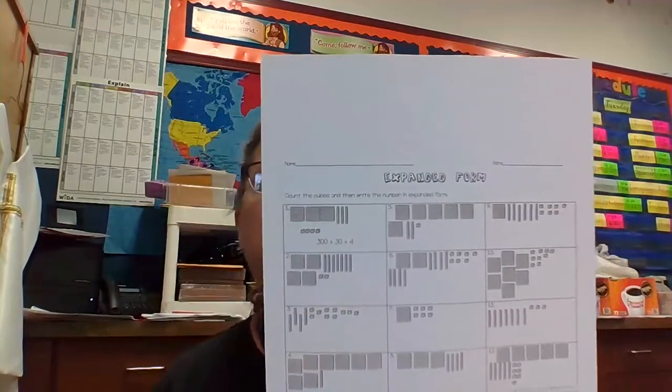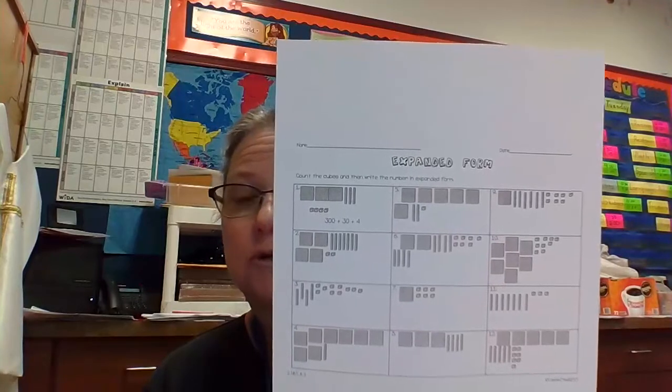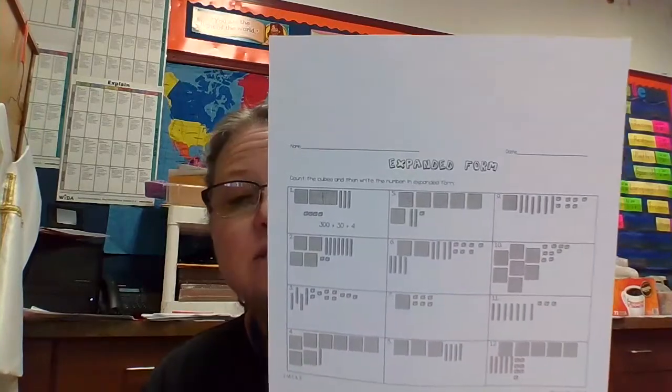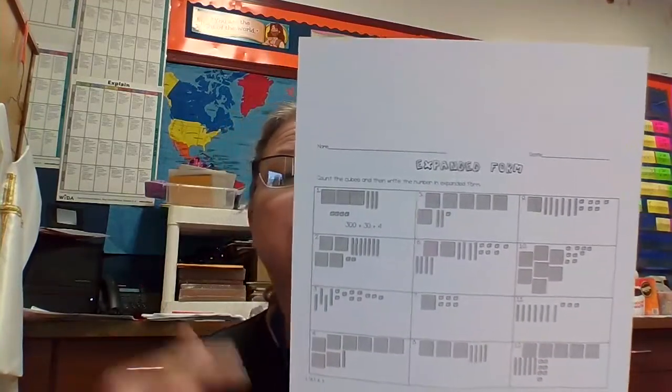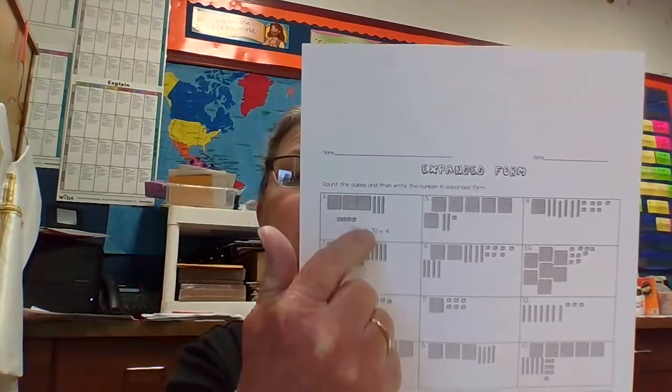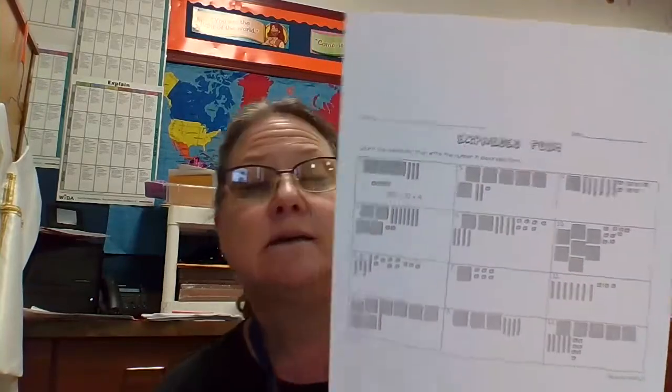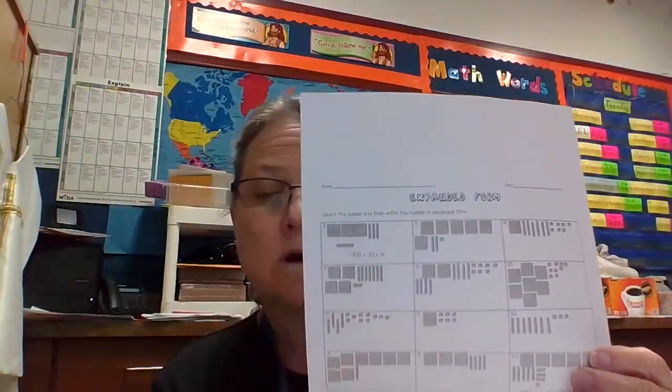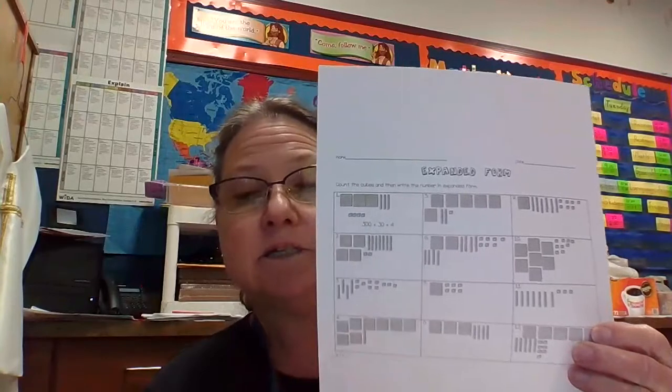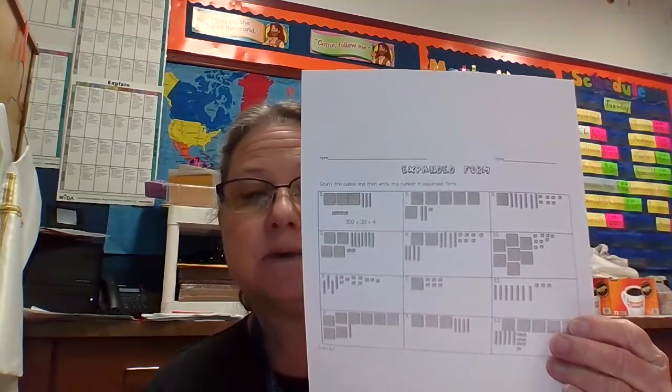Some of you have a math page that looks like this called expanded form. And what it has is our base 10 blocks that we draw, like what we draw, our pictures, our quick draws. If you have this one, then what you're going to do is you're going to count how many hundreds and write it, plus how many tens and write it, plus how many ones. And you're going to write that in expanded form. So you're just counting like you would in expanded form.